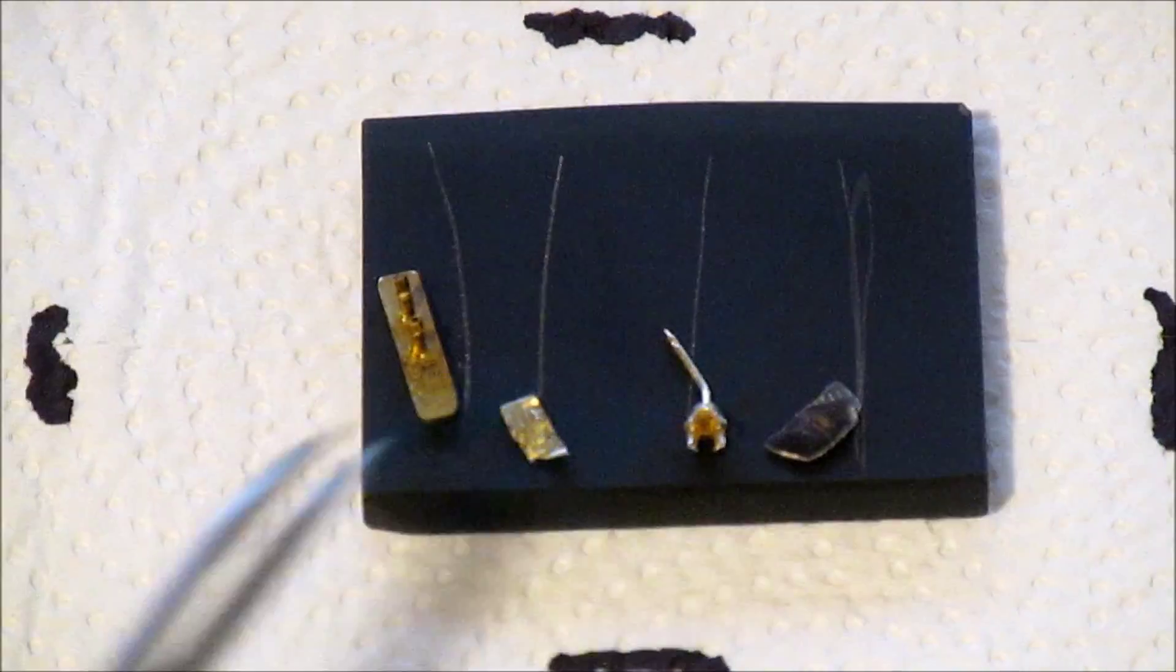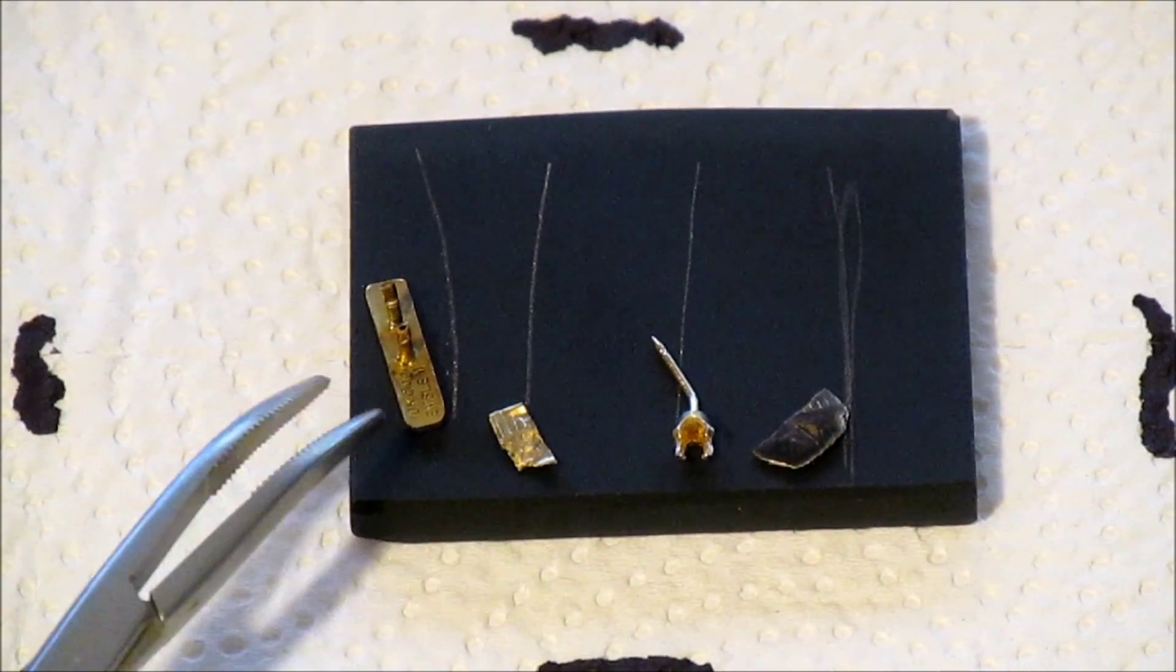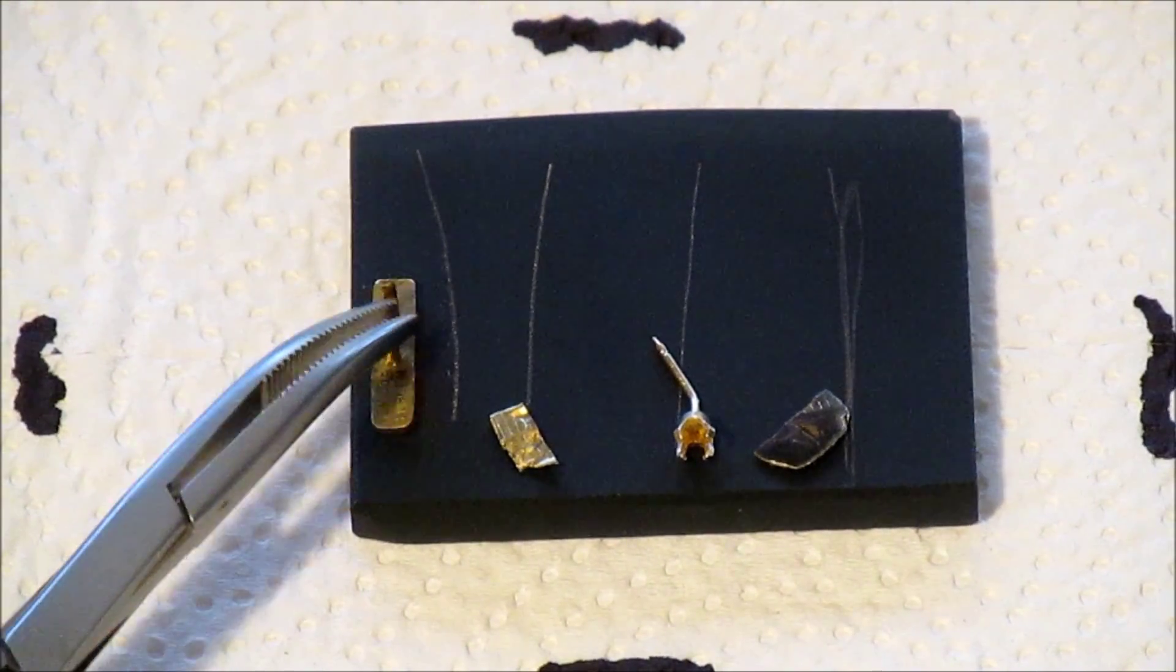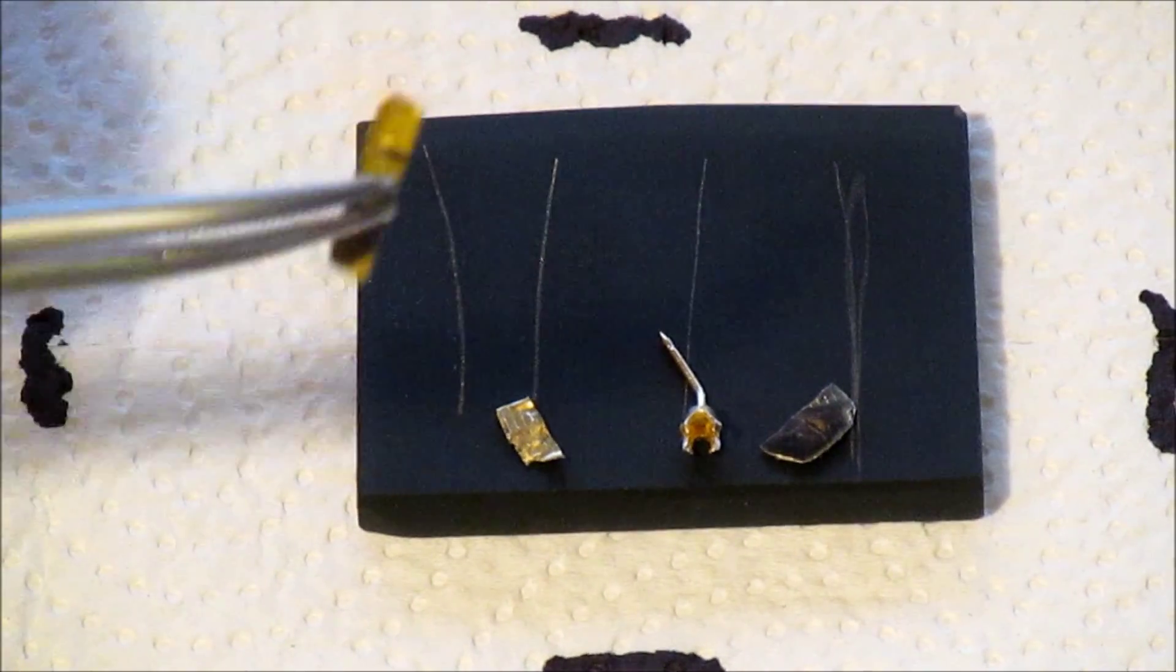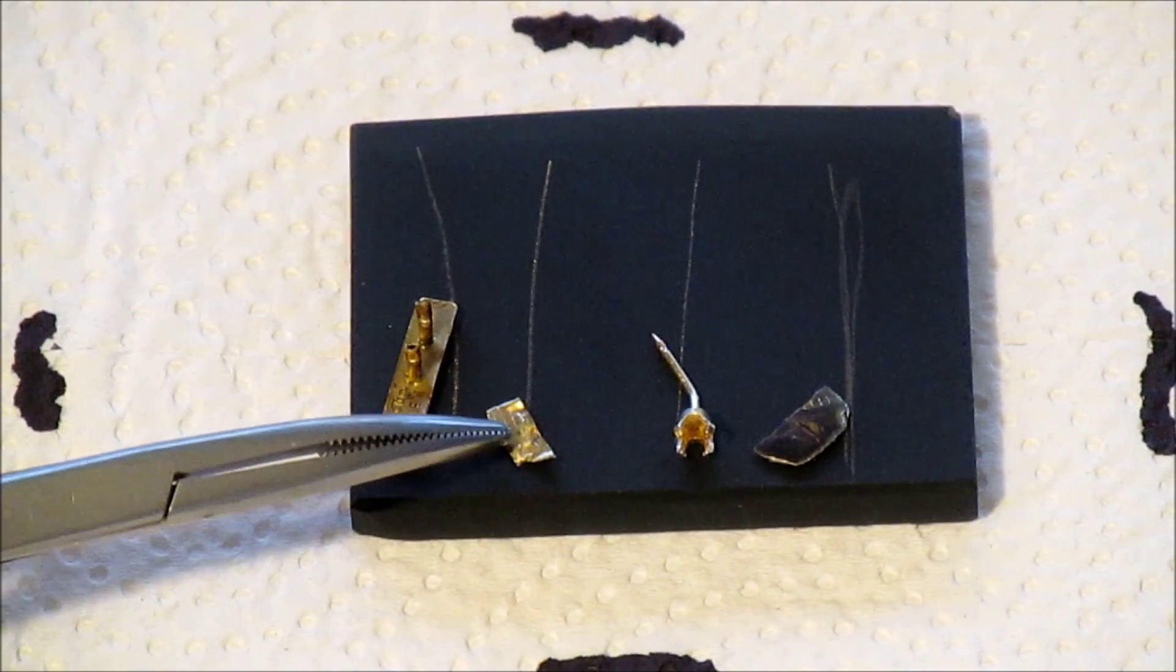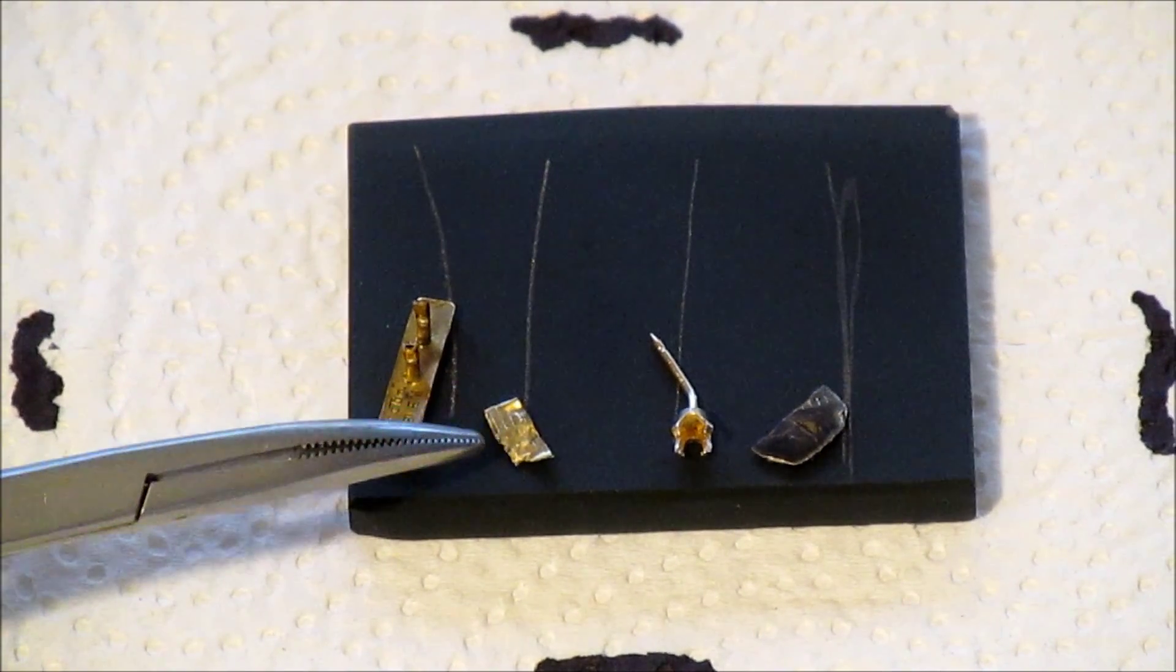Okay, now we're going to test these gold items. This piece here is marked 10 karat—it came off of a pen. This piece is not marked, but it came out of a bracelet that said it was 10 karat.